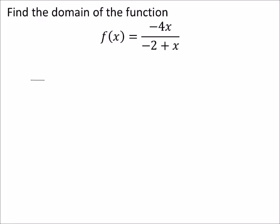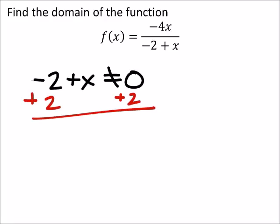So let's just look at the denominator. We got a negative 2 plus x, like this. And we know that this cannot ever be zero. So we make it an inequality like this. And then to solve it, we would just add 2 to both sides. And we see that x cannot equal 2.